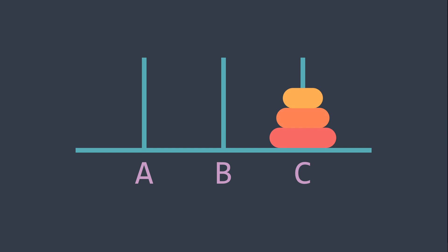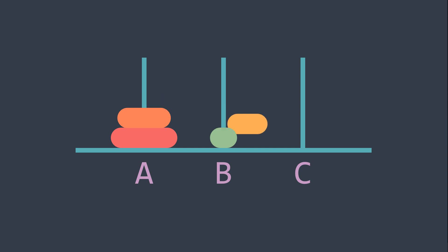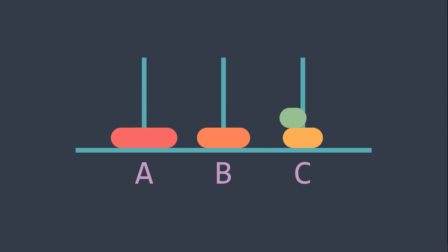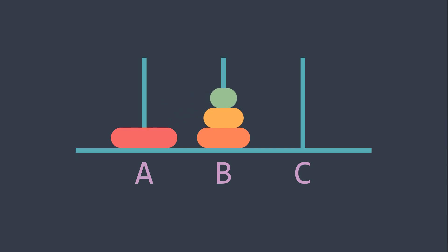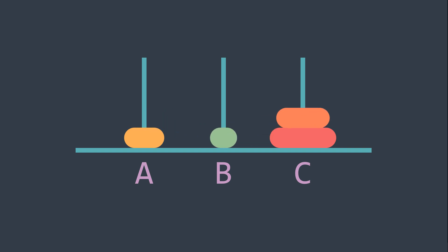Now for 4 disks, to solve the puzzle, we move from A to B, from A to C, from B to C, from A to B, from C to A, from C to B, from A to B, from A to C, from B to C, from B to A, from C to A, from B to C, from A to B, from A to C, and from B to C.